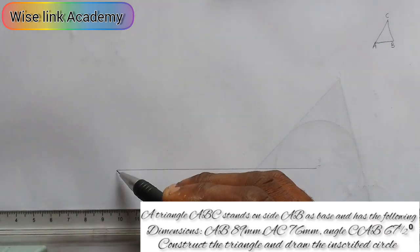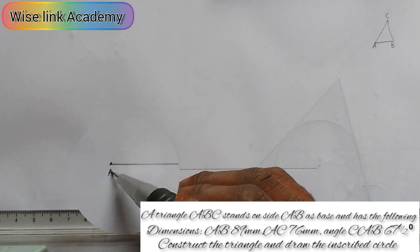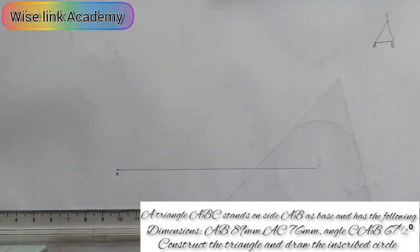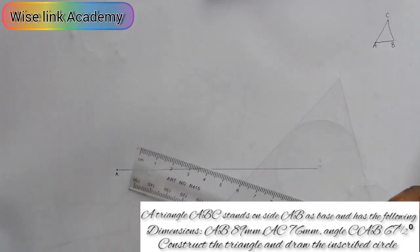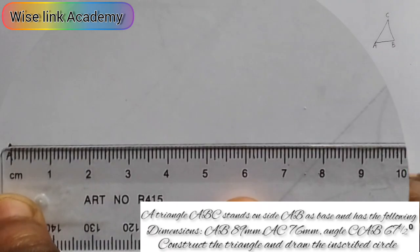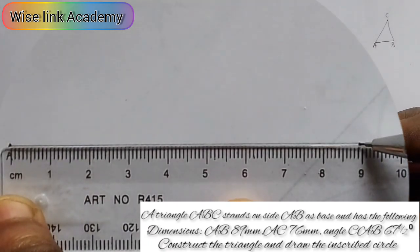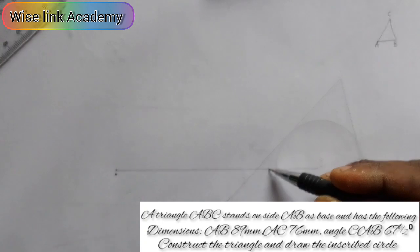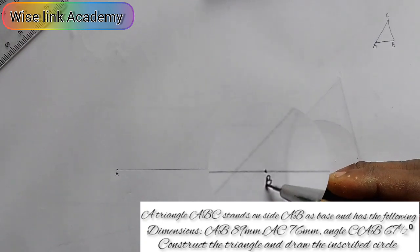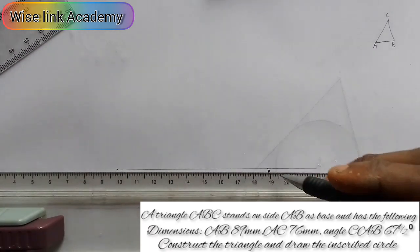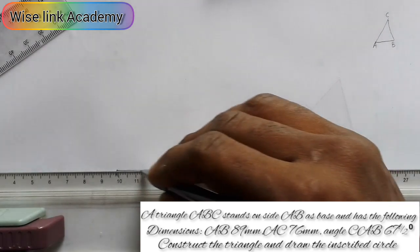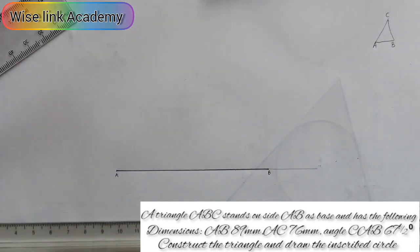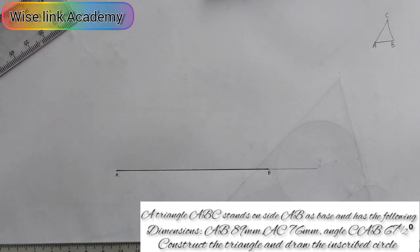Draw a faint line and call this point my point A. At point A, I will measure out 89mm. From this point to this point, 89 falls at this point, so I will mark my point B there. I'll ink in the two points. My next step is that I'm given AC to be 76mm.